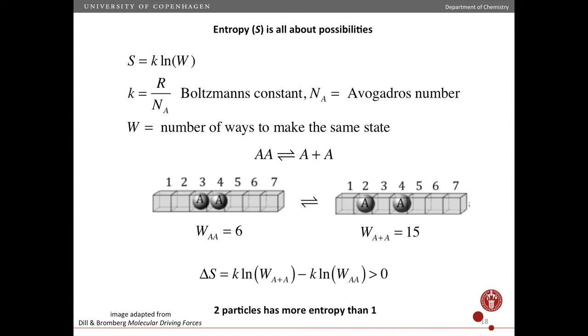So there's more ways of making this state than there are of making this state. So the entropy of this state is higher than the entropy of this state. So the entropy change on going from here to here is positive. So another way of saying this is that two particles has more entropy than one. But it really is all about the statistics of the problem, the possibilities.